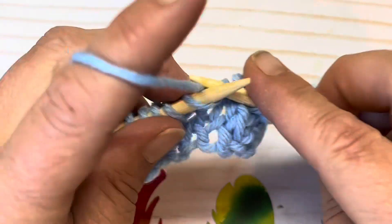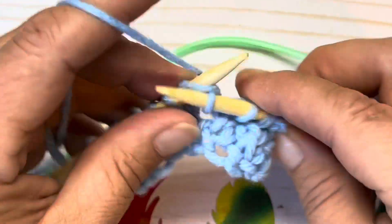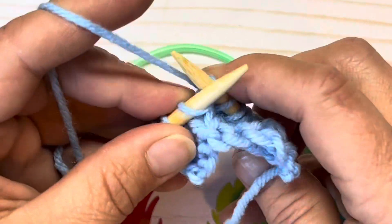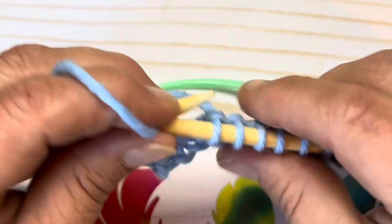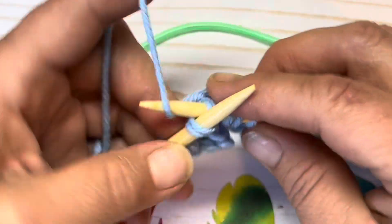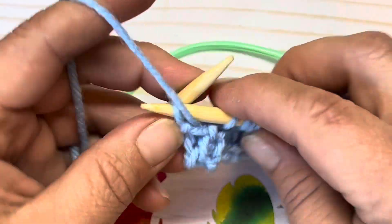Knit five - one, two, three, four, five. Knit two together, and purl one.